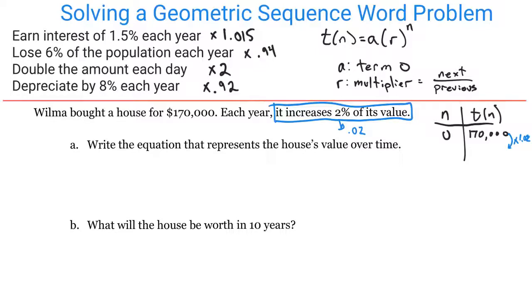That means one year later, this house is going to be worth $173,400. You would continue to multiply by 1.02 every time. The next year would be a total of $176,868. That's how you know it's geometric—it's not growing by the same quantity each time, but by the same percent.